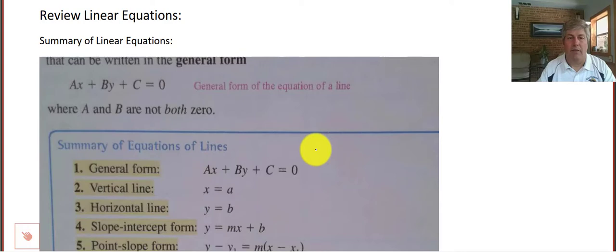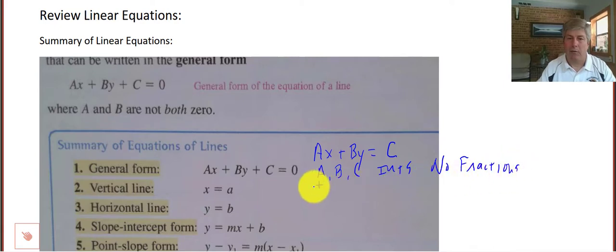Standard form here, they use ax plus by plus c equals zero. You may remember from our previous studies, we use ax plus by equals c. So we don't set it equal to zero, we set the equation equal to that constant. But remember that a, b, and c must be integers. So no fractions here in this format. And a has to be positive. So our coefficient on x has to be positive.